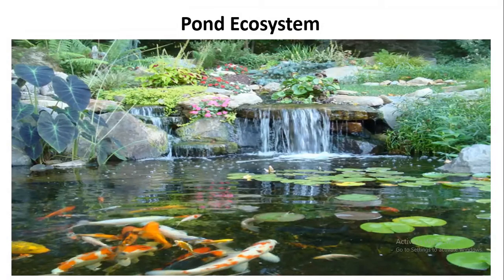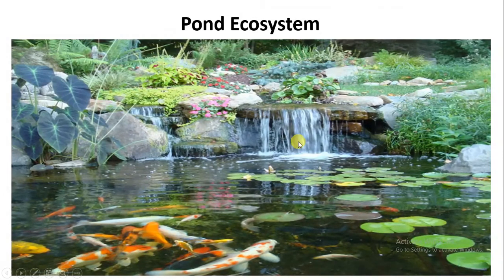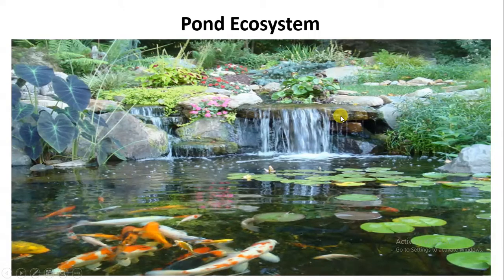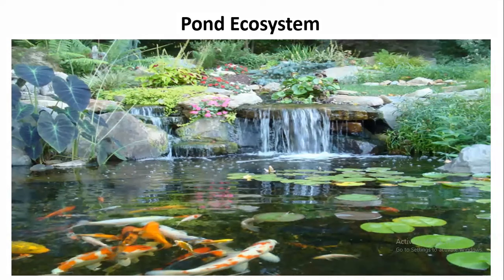We will start with the pond ecosystem. The pond ecosystem contains all the components of an ecosystem. It has the living, that is the biotic component, and it has the non-living, that is the abiotic component. When we talk about the abiotic components, there is presence of water, rocks, temperature, pH, and salinity of water.